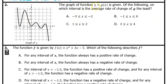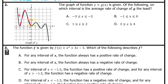Number 2. The graph of function y equals g(x) is given. On which interval is the average rate of change of g the least? Remember, on a graph the average rate of change is the slope, so we are looking for the interval with the least slope. The slope on the interval from negative 3 to negative 2 is positive, while the slope on the interval from negative 1 to 0 is negative. A negative number is always less than any positive number, so A is out.